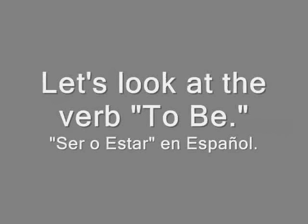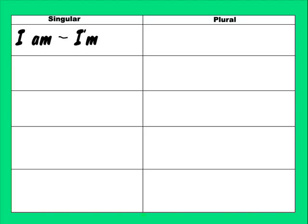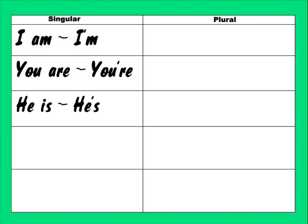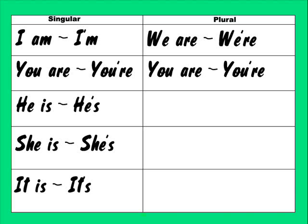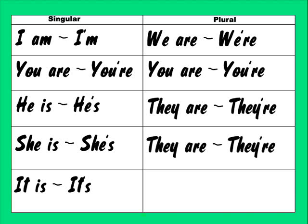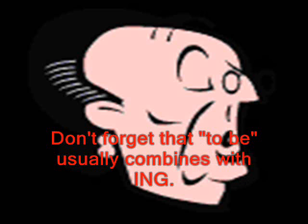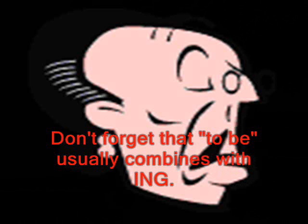Let's look at the verb 'to be': I am (I'm), you are (you're), he is (he's), she is (she's), it is (it's), we are (we're), you are (you're), they are (they're). Don't forget these contractions.